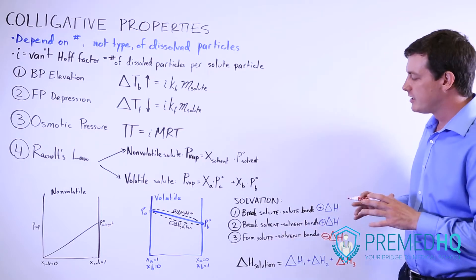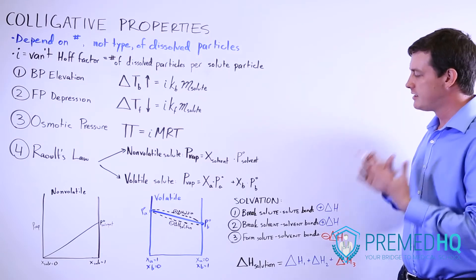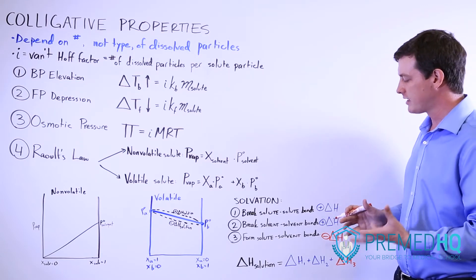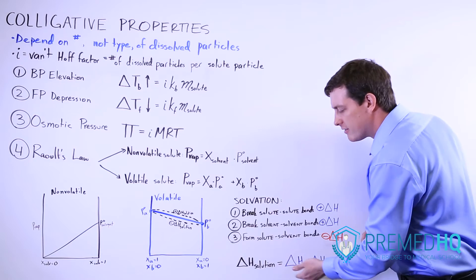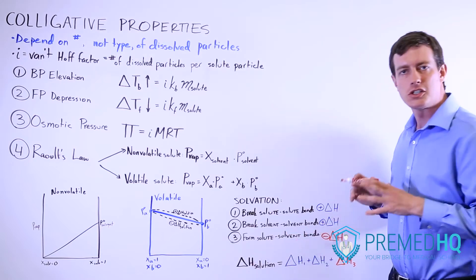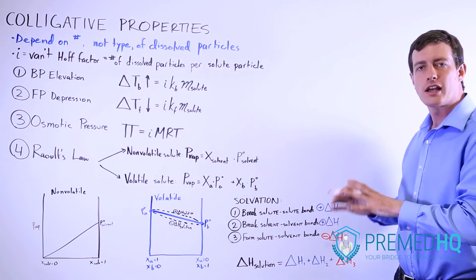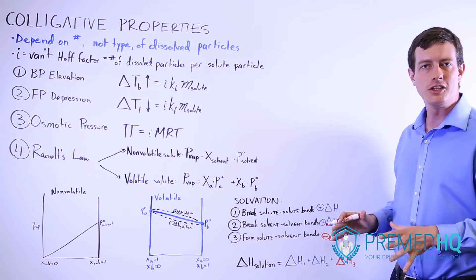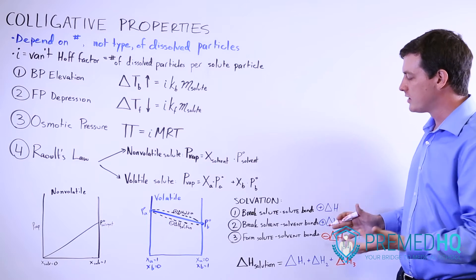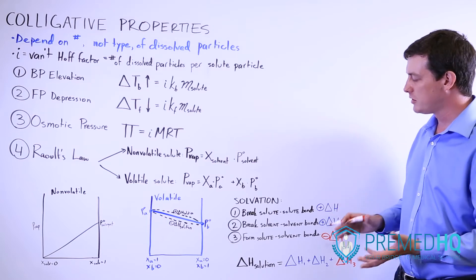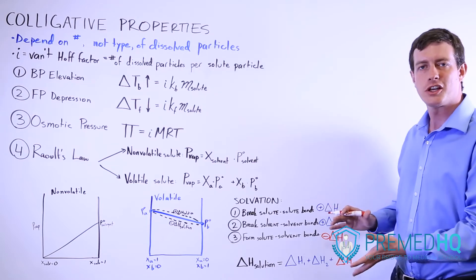The general rule is that favorable dissolving processes have a negative ΔH of solution — they are exothermic overall. Unfavorable dissolving processes tend to be endothermic overall.